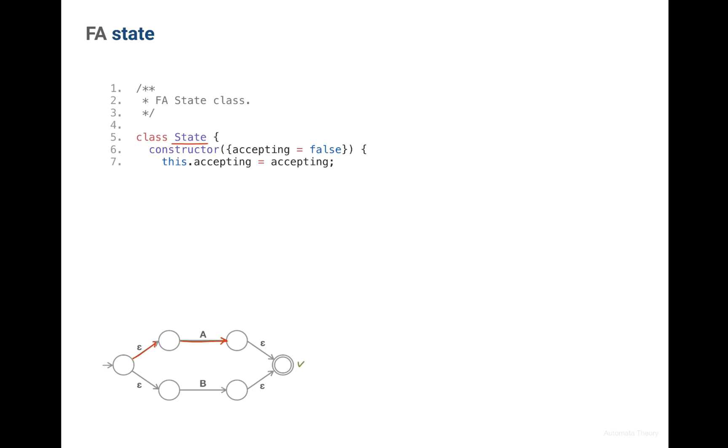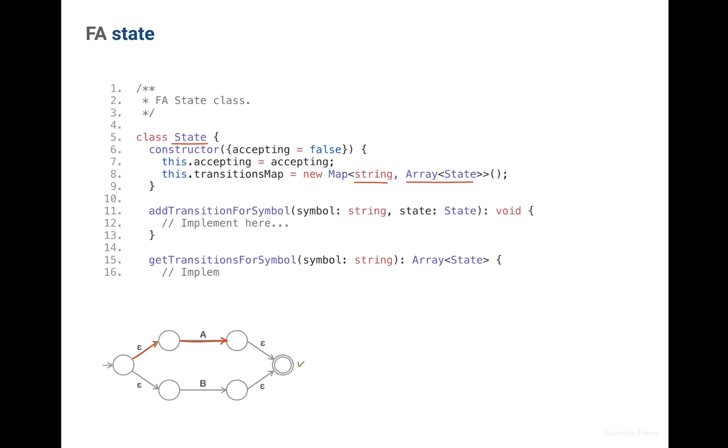Next we also see that a state has a set of edges or transitions to other states. Since each transition has a label, let's store the transition as a map from a symbol to the set of destination states. So your assignment is to complete this implementation and test it on the following examples.